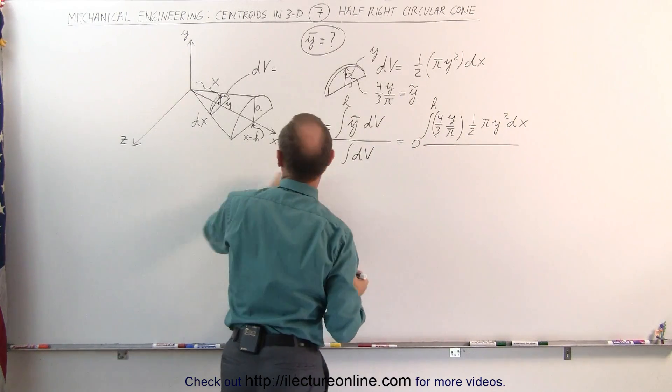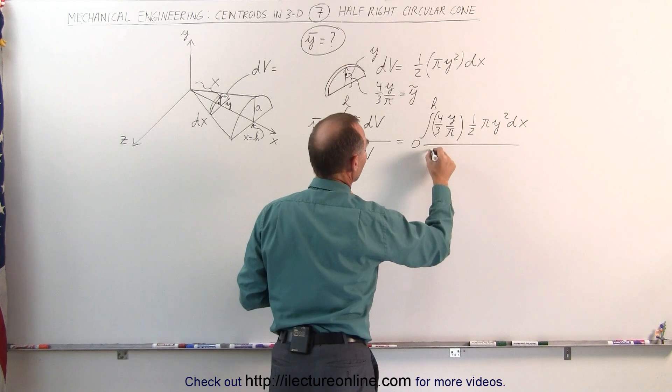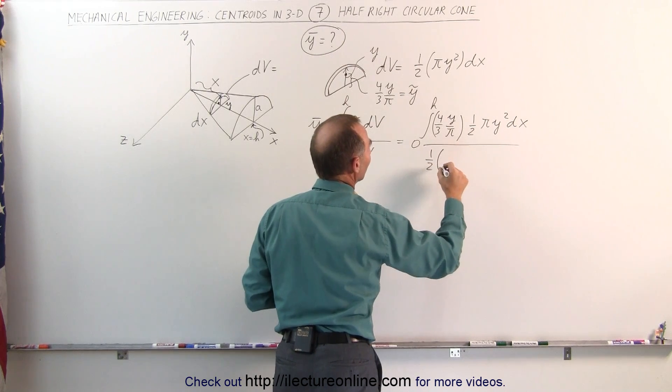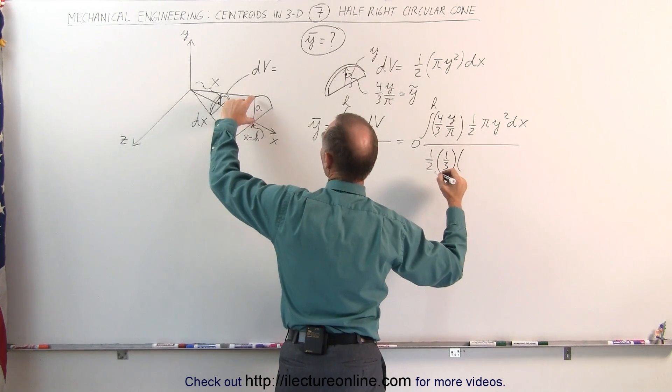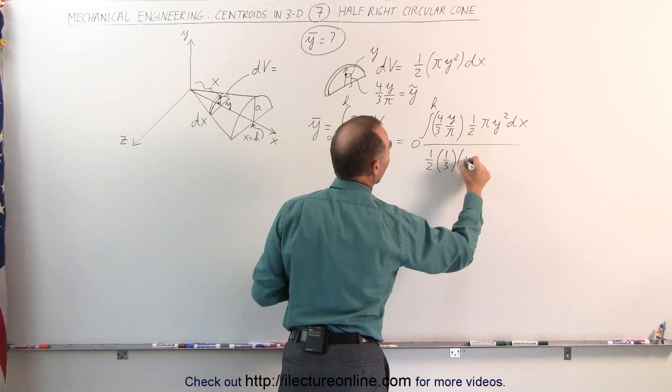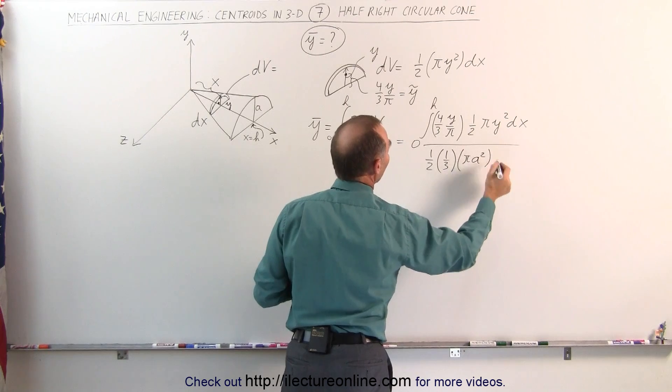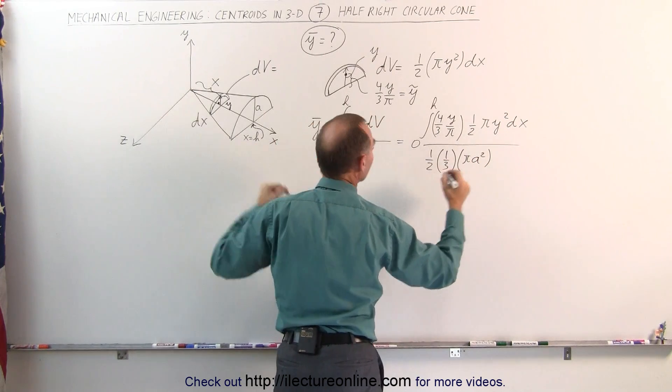Divided by half the volume of a right circular cone that is 1 half times 1 third times the area of the base which is at the bottom here, the radius is a, that's pi a squared times the height of the cone which is still equal to h.